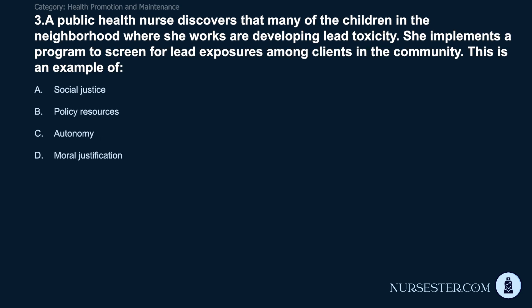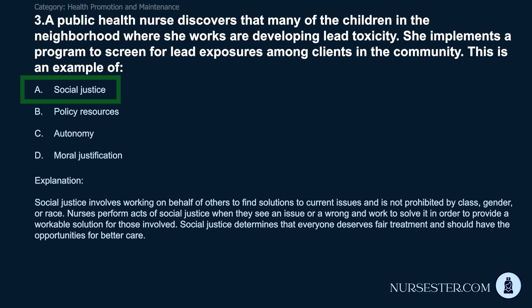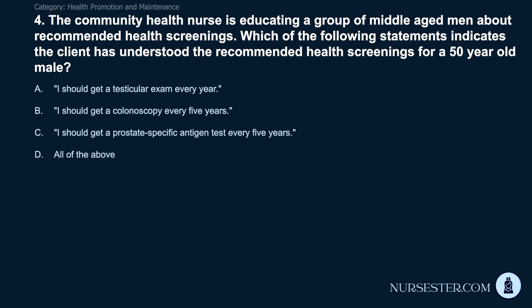Question 3: A public health nurse discovers that many children in the neighborhood are developing lead toxicity. She implements a program to screen for lead exposures among clients in the community. This is an example of: A) social justice. B) policy resources. C) autonomy. D) moral justification. Correct answer: A. Social justice. Social justice involves working on behalf of others to find solutions to current issues and is not prohibited by class, gender, or race. Nurses perform acts of social justice when they see an issue and work to solve it. Social justice determines that everyone deserves fair treatment and opportunities for better care.